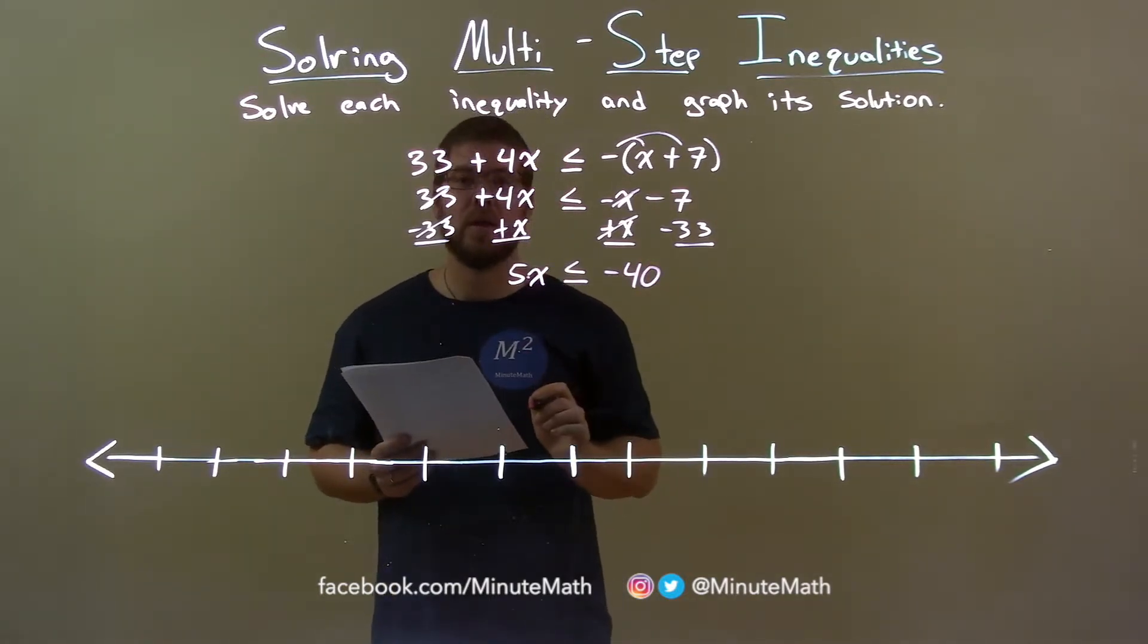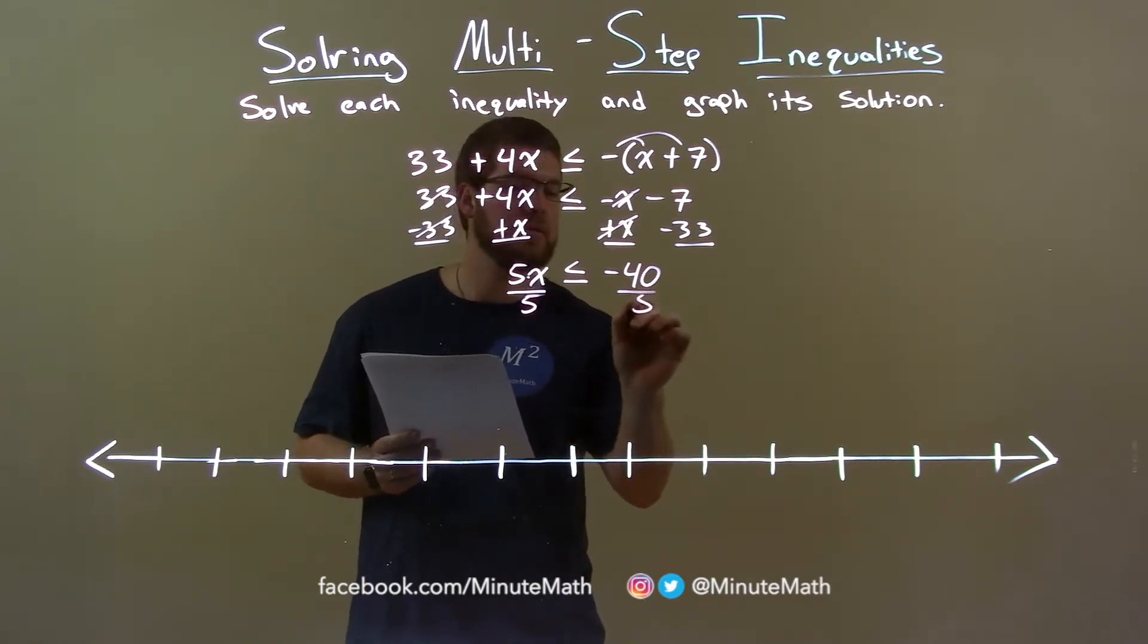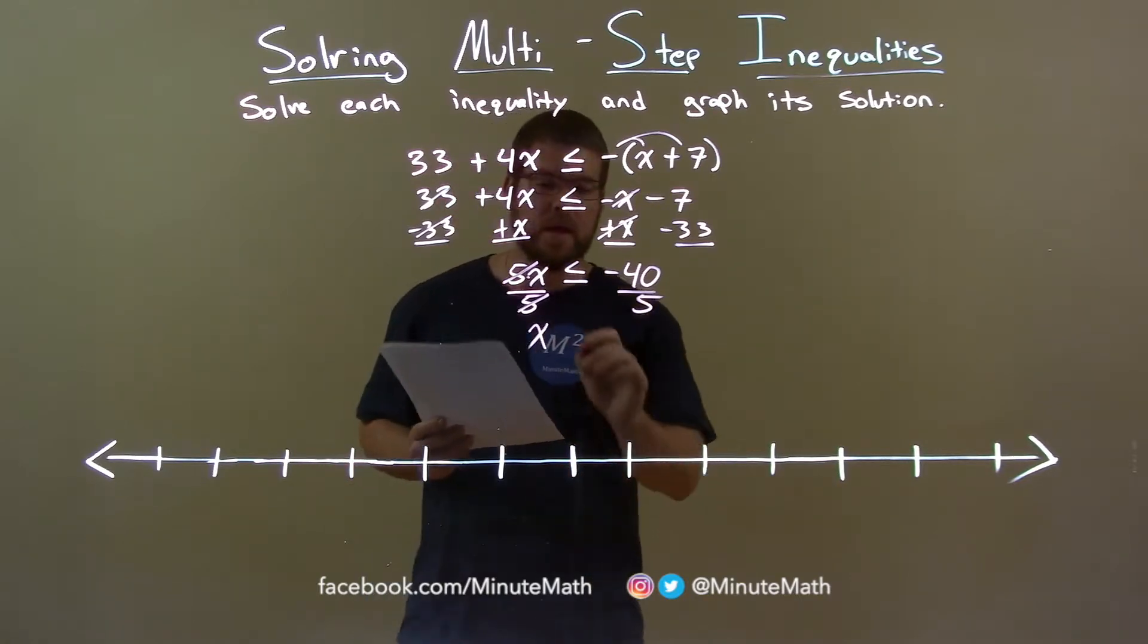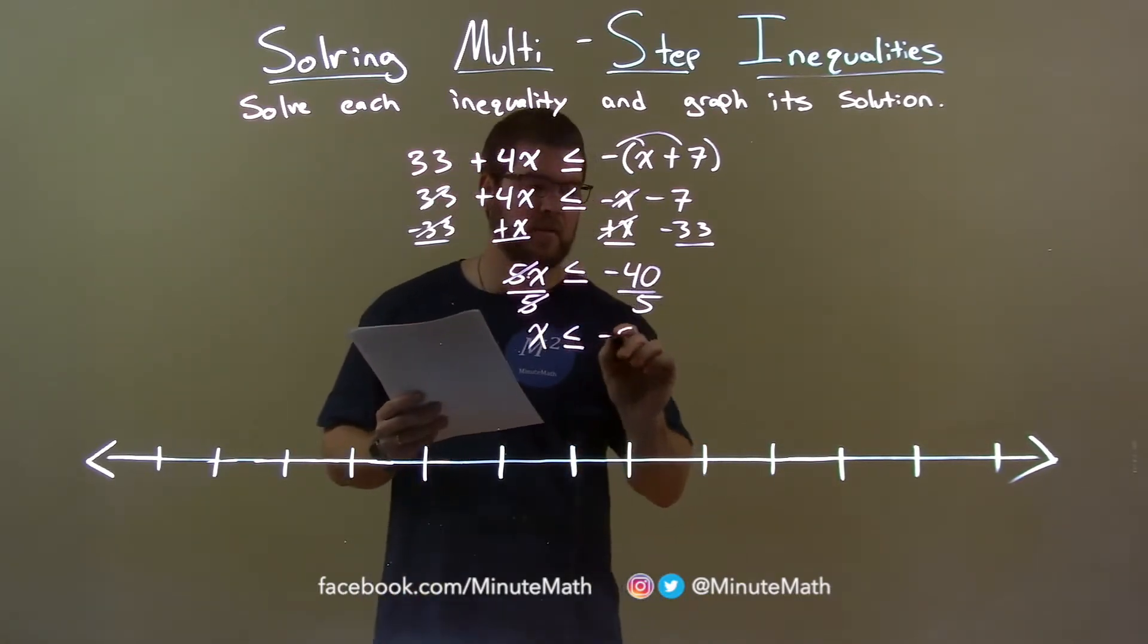Multiplication is going on there, so opposite of multiplication is division. Divide both sides by 5, the 5's cancel, and x is now by itself. It's less than or equal to, and negative 40 divided by 5 is negative 8.